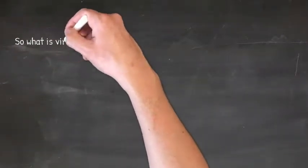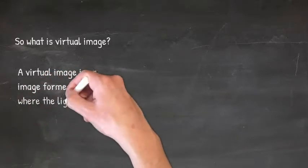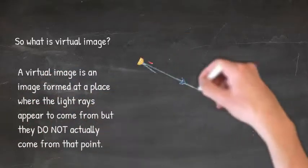So what is a virtual image? A virtual image is an image formed at a place where the light rays appear to come from, but they do not actually come from that point.